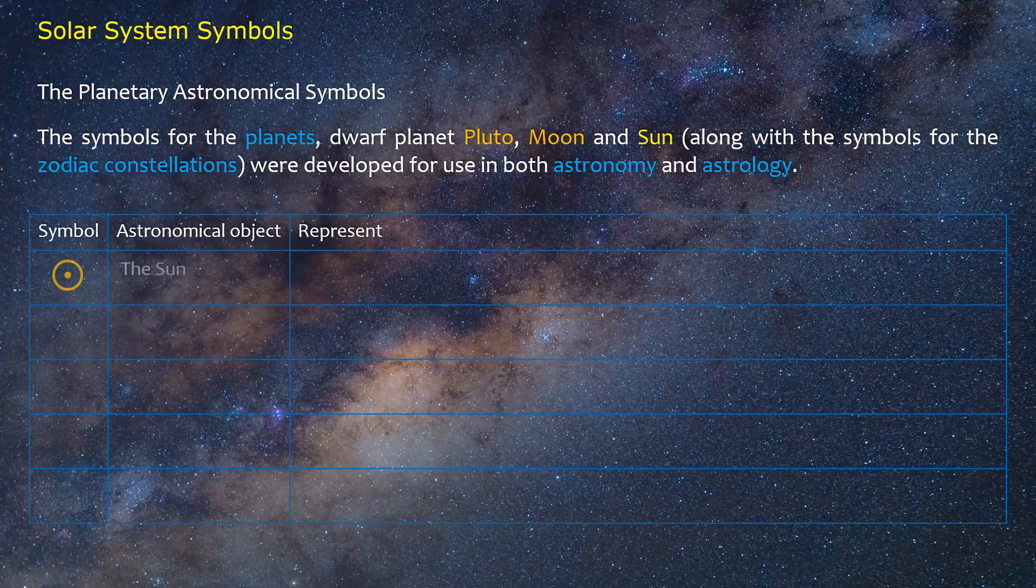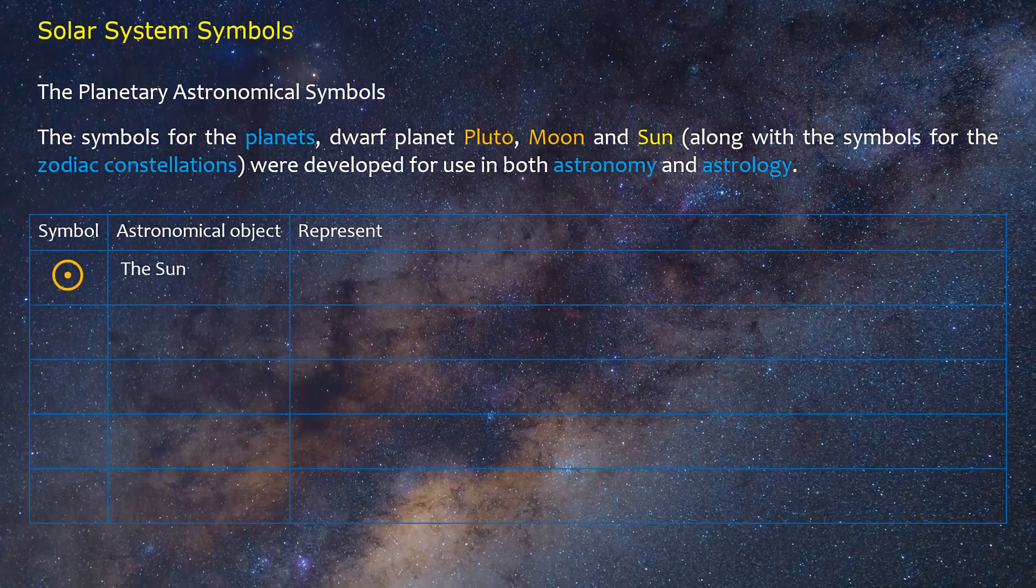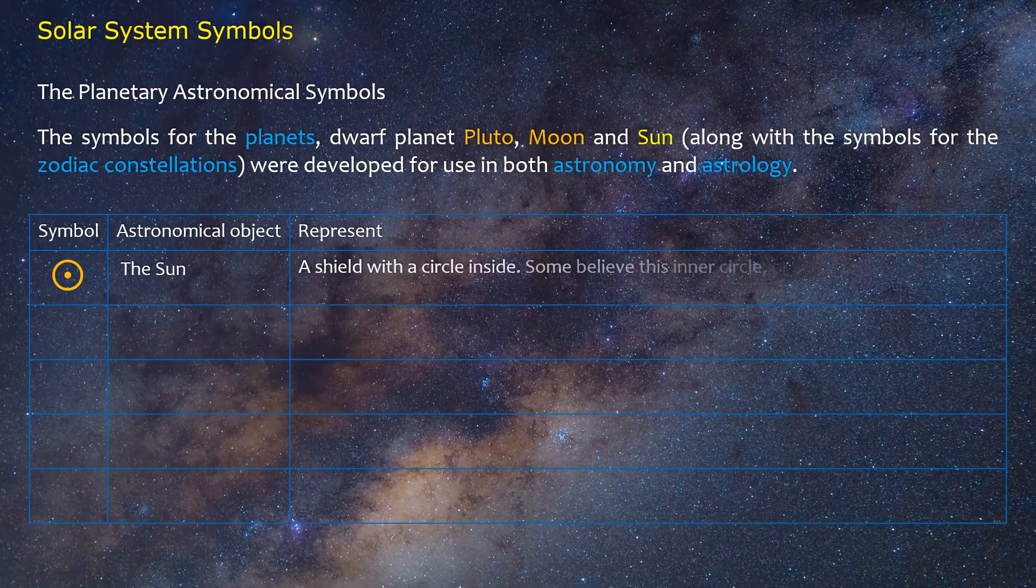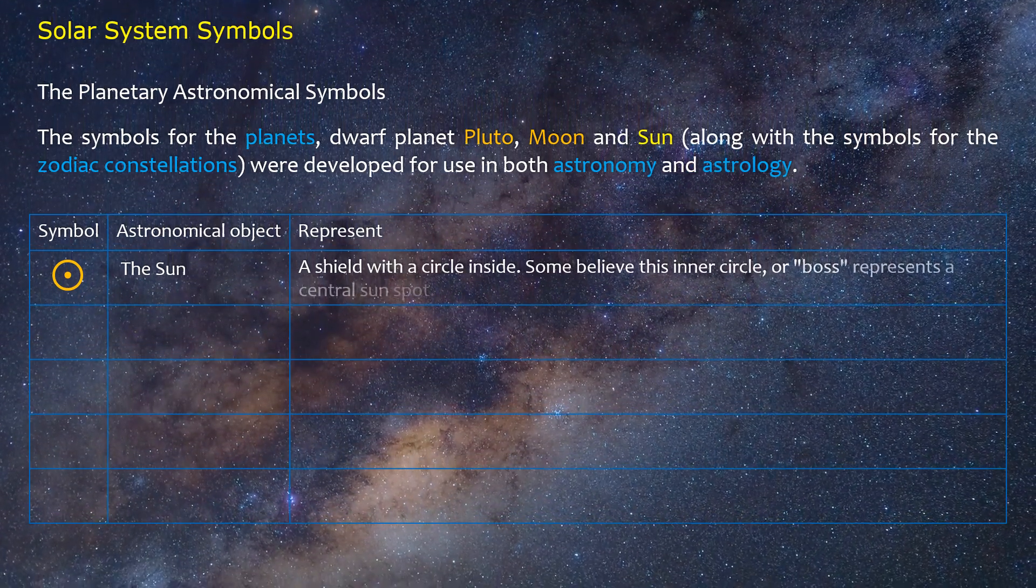The Sun: A shield with a circle inside. Some believe this inner circle, or boss, represents a central sun spot.